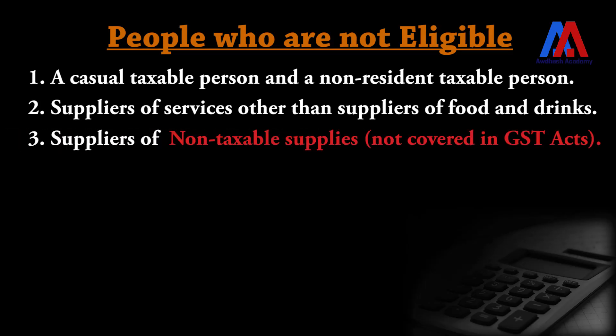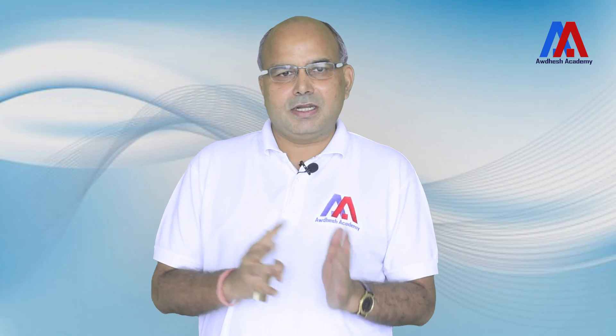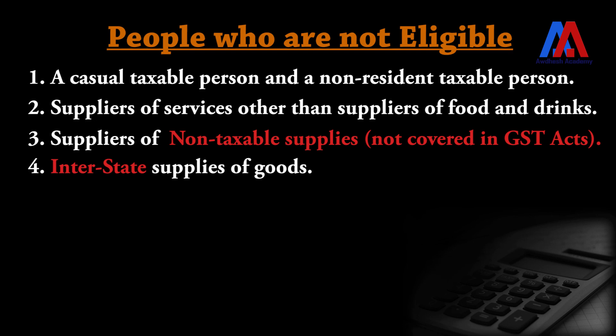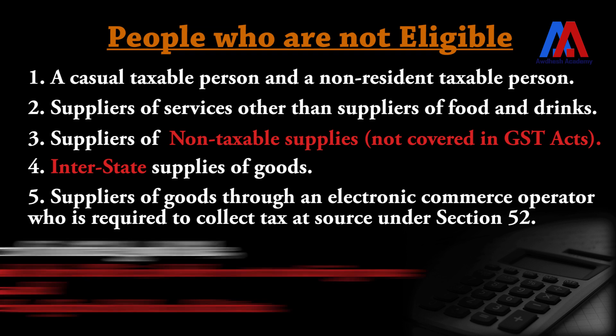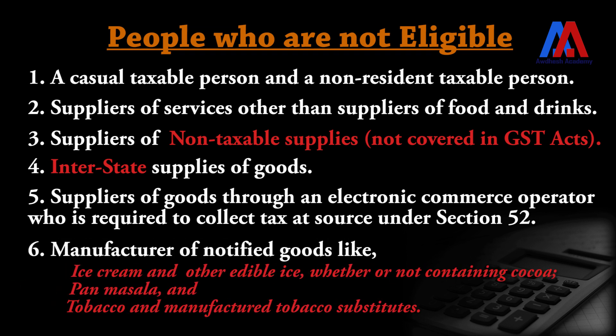Then, the supplier of non-taxable goods through an electronic commerce operator who is required to collect tax at source under Section 52 is also not covered. Then, the supplier of goods through an electronic commerce operator, and finally, manufacturer of certain notified goods — for example, ice cream and other edible ice whether or not containing cocoa, paan masala, and tobacco and manufactured tobacco substitutes — these manufacturers are also not covered under the composition levy.